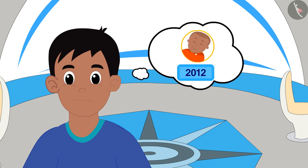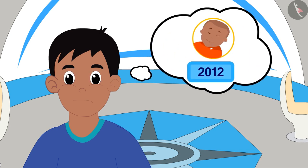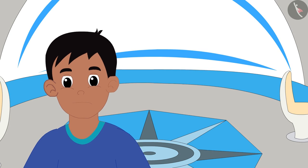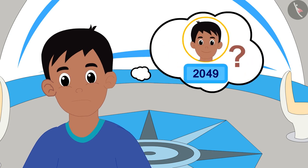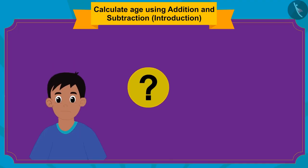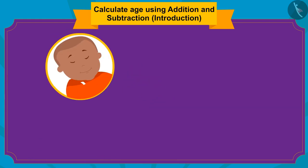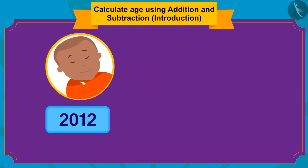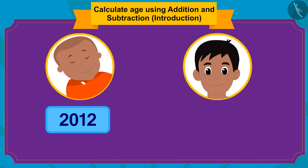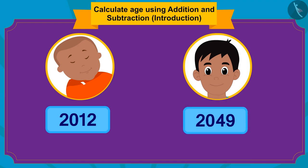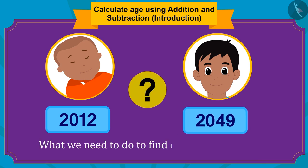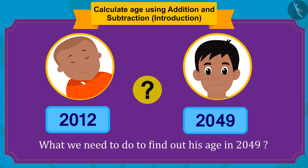Now, Raju is thinking that he was born in the year 2012. So, how old will he be in 2049? Children, can you find an answer to this question? Raju was born in 2012 and now they were in the year 2049. So, what do we have to do to find out his age in 2049?